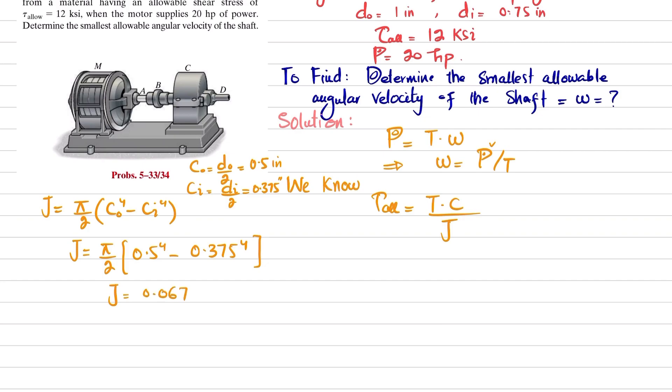So you have J. And what will be the c? So c is maximum distance from neutral axis to outermost, which is d_o divided by 2, and that will be equal to 0.5 inch.